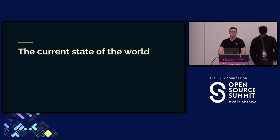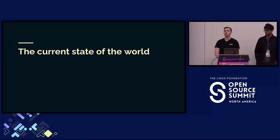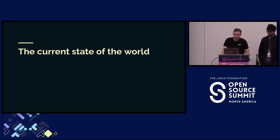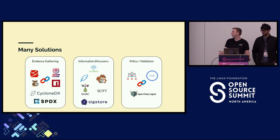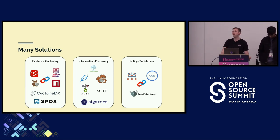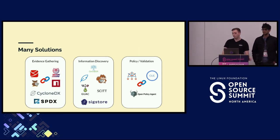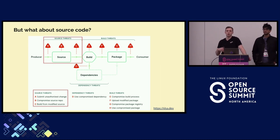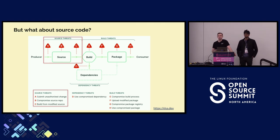Today we're here to talk about Git source provenance and a bunch of different things, but first I want to talk about the current state of the world. If you've been around the software supply chain track this week, you've probably seen a bunch of different tools — everything from generating provenance and attestations, to how do we query it, discover this metadata, write policy and evaluate these things. But a lot of this tends to be very directed towards artifacts and in particular runtime artifacts — images, packages, stuff like that.